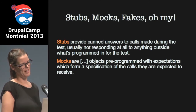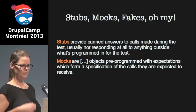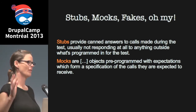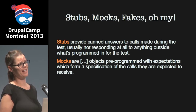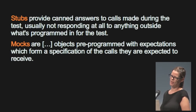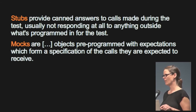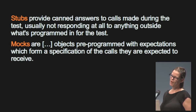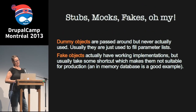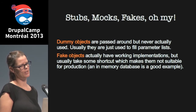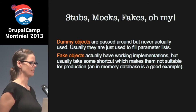There are various types of test doubles — we're going to focus on stubs and mocks. These definitions come from Martin Fowler's write-up on the differences. Stubs provide canned answers to calls made during the test, usually not responding to anything outside what's programmed in. Mocks are objects pre-programmed with expectations that form a specification of the calls they're expected to receive. Dummies are passed around but never actually used — they're just there to fill parameter lists. Fakes actually have working implementations but take shortcuts making them unsuitable for production — an in-memory database is an example.